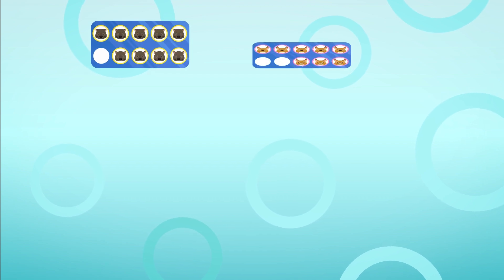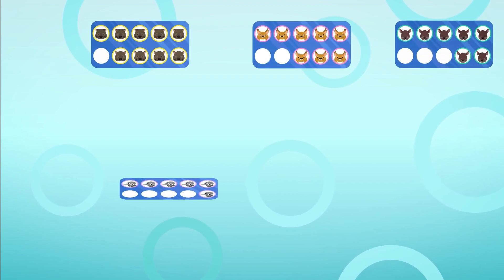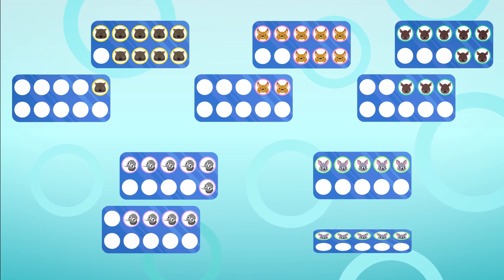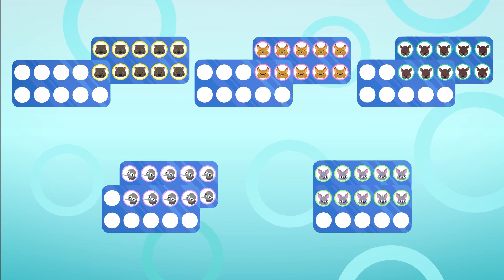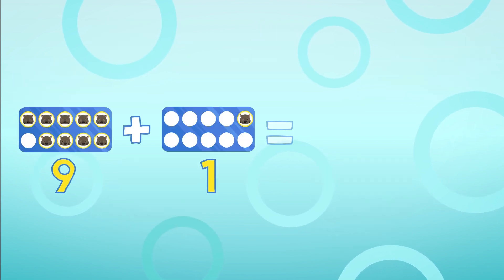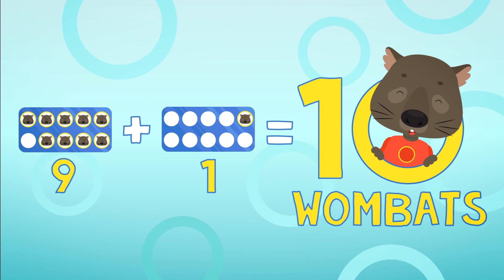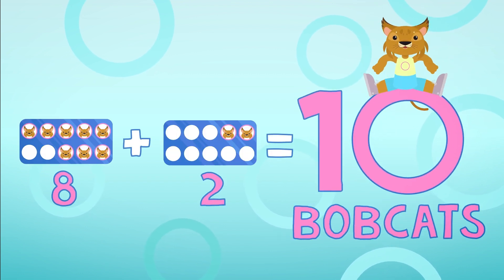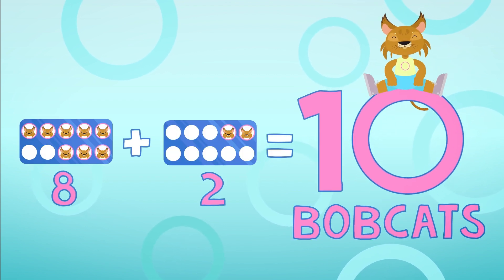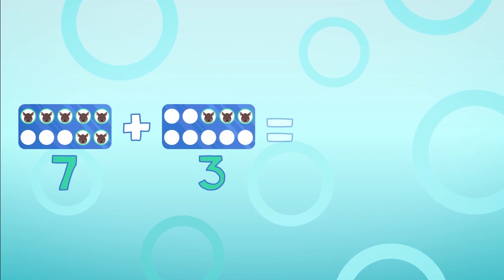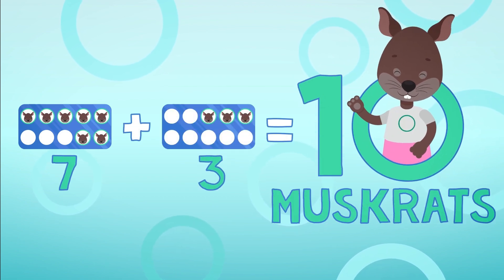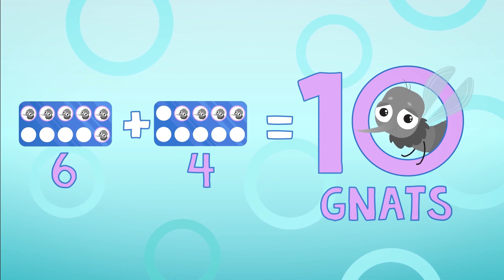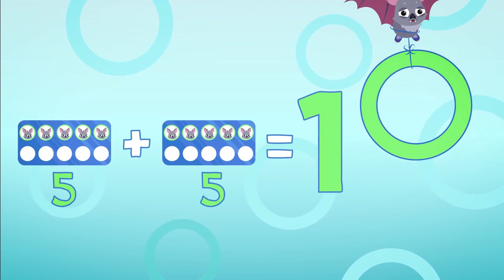Let's fill in each 10 frame by matching cards that are the same. 9 and 1 makes 10 wombats, 8 and 2 makes 10 bobcats, 7 and 3 makes 10 muskrats, 6 and 4 makes 10 bats, 5 and 5 makes 10 bats.